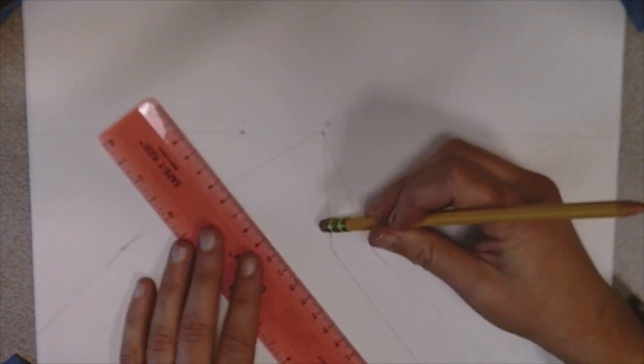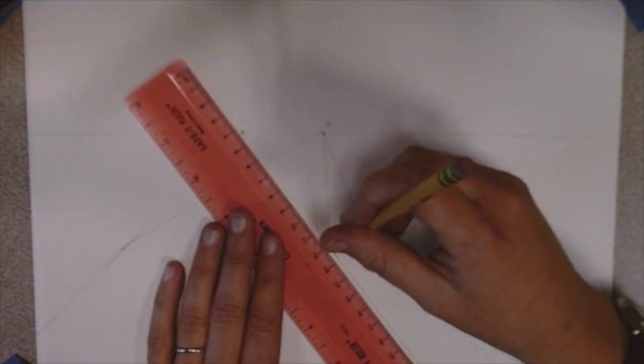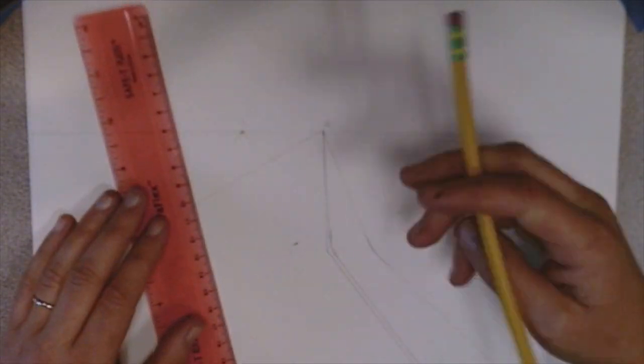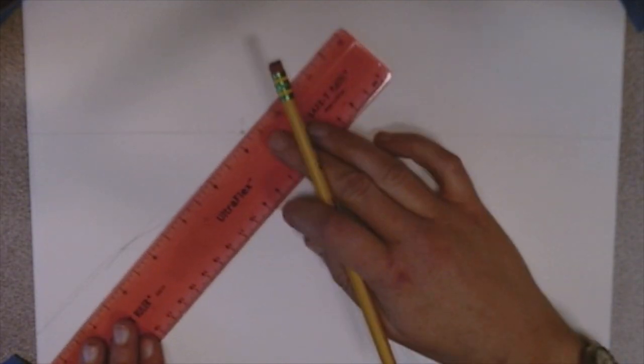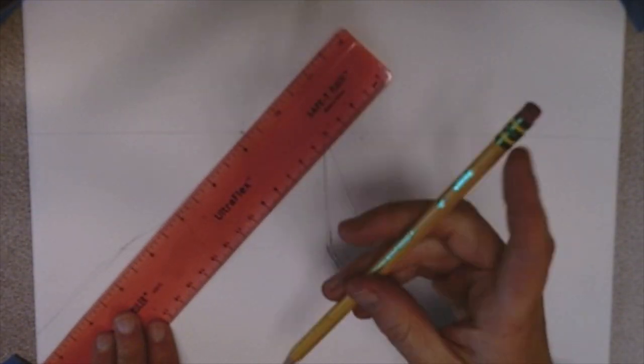And here I'm drawing the white line on the side of the road and it's following that same contour, that same angle as the side of the road. So it's going to vanishing point one and then to vanishing point two.